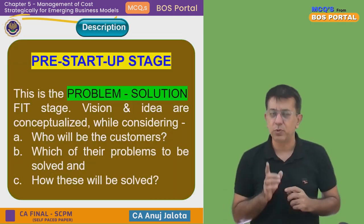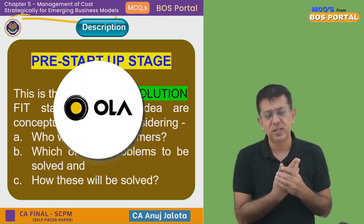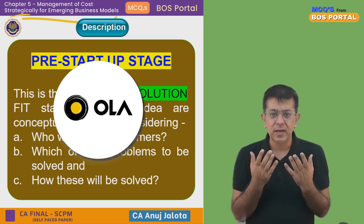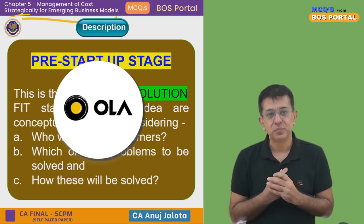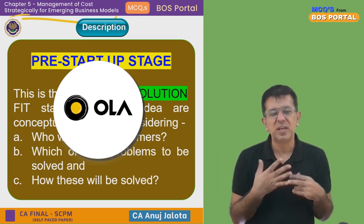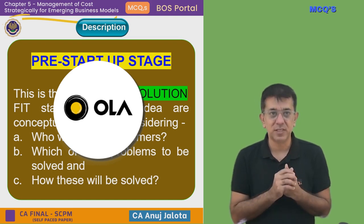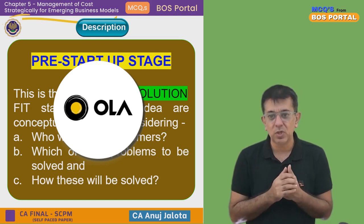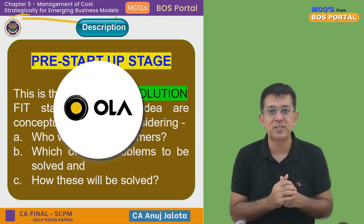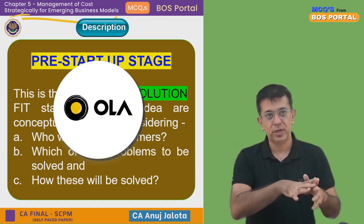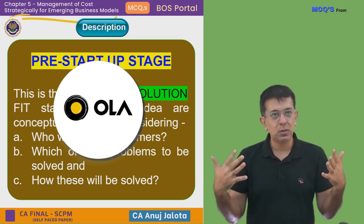There are three stages a startup goes through. The first is called the pre-startup stage, also called Problem Solution Fit. Take a company like Ola. When Ola started, they identified a problem: a normal person who wishes to travel has to take their car out — parking is a problem in cities like Mumbai, driving means you can't talk on the phone or operate a laptop, keeping a driver is expensive, and calling a taxi without an app was also a problem. Around ten years ago, how would you call a taxi to your house? They had a problem and a solution: develop an app that links drivers with people who wish to travel, with Ola as the medium in the middle.